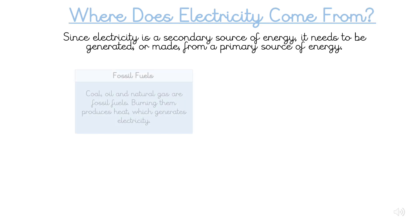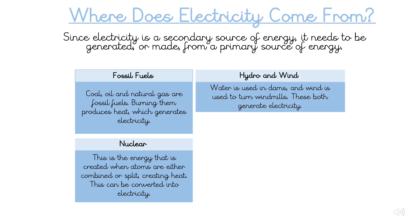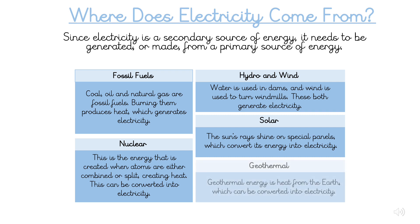Coal, oil and natural gas are fossil fuels. Burning them produces heat, which generates electricity. Nuclear energy is energy created when atoms are either combined or split, creating heat, which can be converted into electricity. Water is used in dams and wind is used to turn windmills — both can generate electricity. The sun's rays shine on special panels which convert its energy into electricity. Geothermal energy is heat from the earth, which can also be converted into electricity.